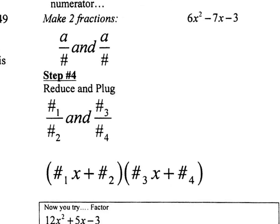So step 4 is reduce and plug. So whatever fraction you have up here, you reduce them, and you get your new reduced fractions. And after that, you simply take the top number, the numerator, and put it right in front of your X, and the bottom number right here goes by itself at the end.